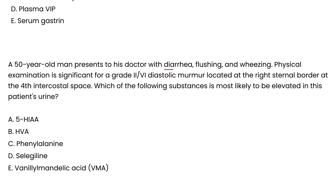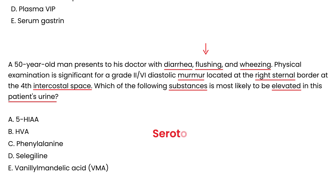A 50-year-old man presents to the doctor with diarrhea, flushing, and wheezing. Physical exam is significant for a grade 2/6 diastolic murmur located at the right sternal border at the 4th intercostal space. Which of the following substances is most likely elevated in this patient's urine? The question asks you to test the patient's urine, which points to a metabolite. The substance most commonly causing these symptoms is serotonin, and its metabolite is 5-HIAA.